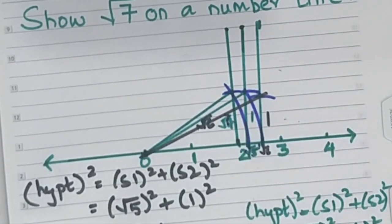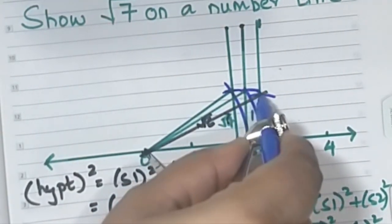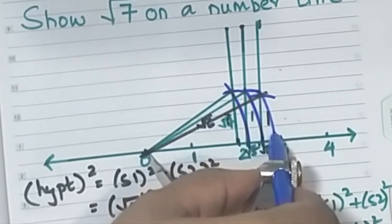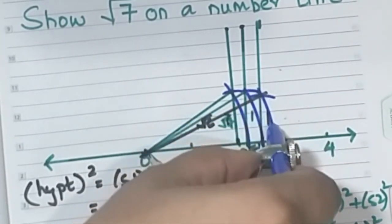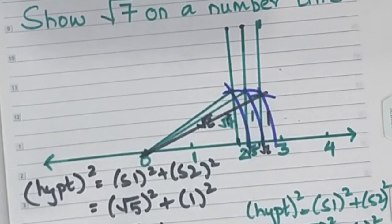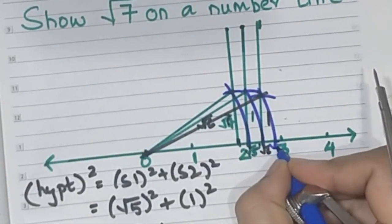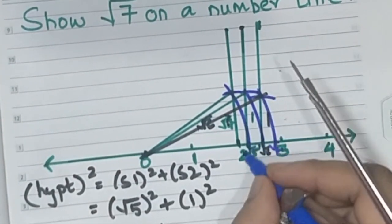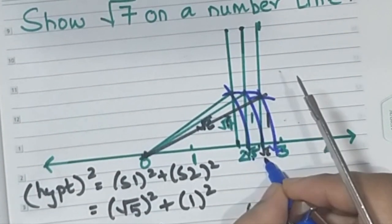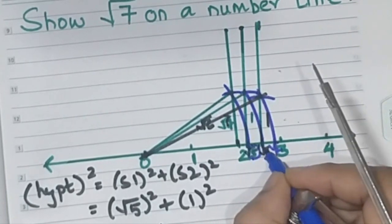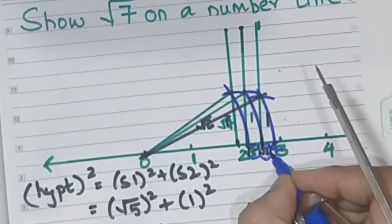So what do we do now? Measure this whole black line and draw an arc. So this particular line is root 7. You have root 5, root 6. This is 5, 6, and 7.